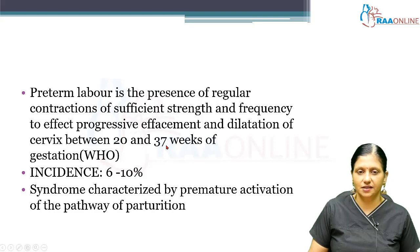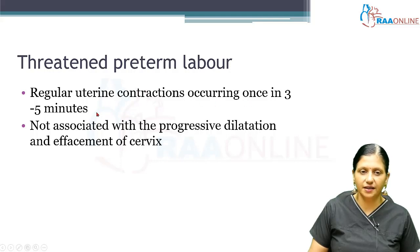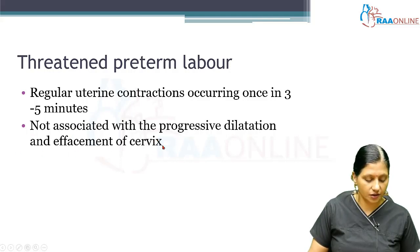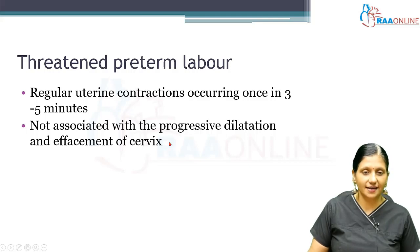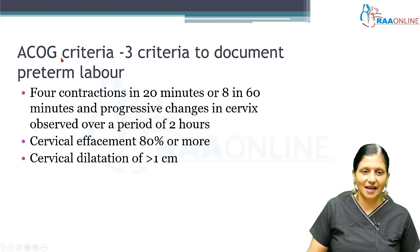Threatened preterm labor is when there are uterine contractions occurring once in every three to five minutes but with no associated progressive dilatation and effacement of the cervix. So in threatened preterm labor there are uterine contractions but no cervical dilatation.